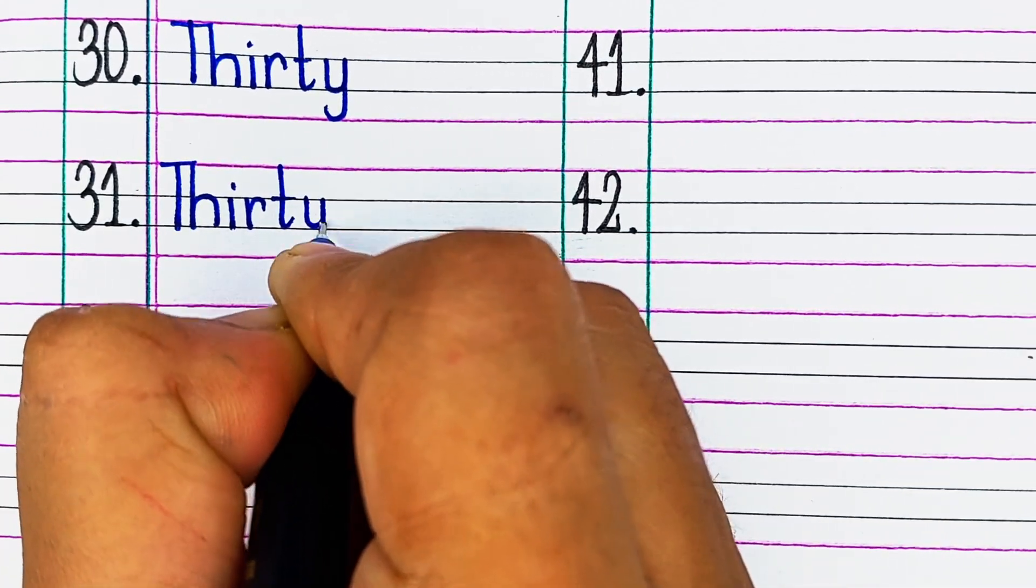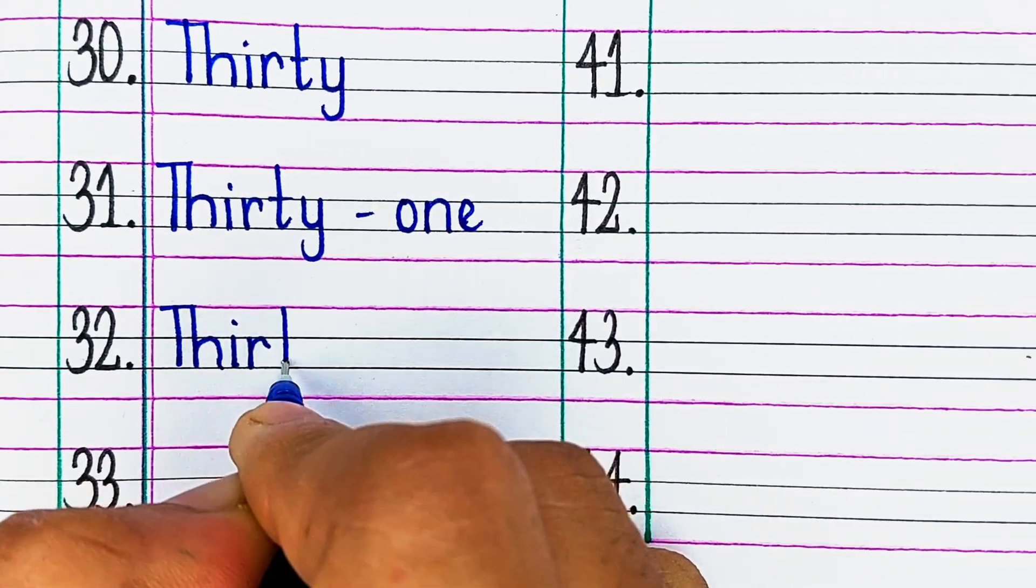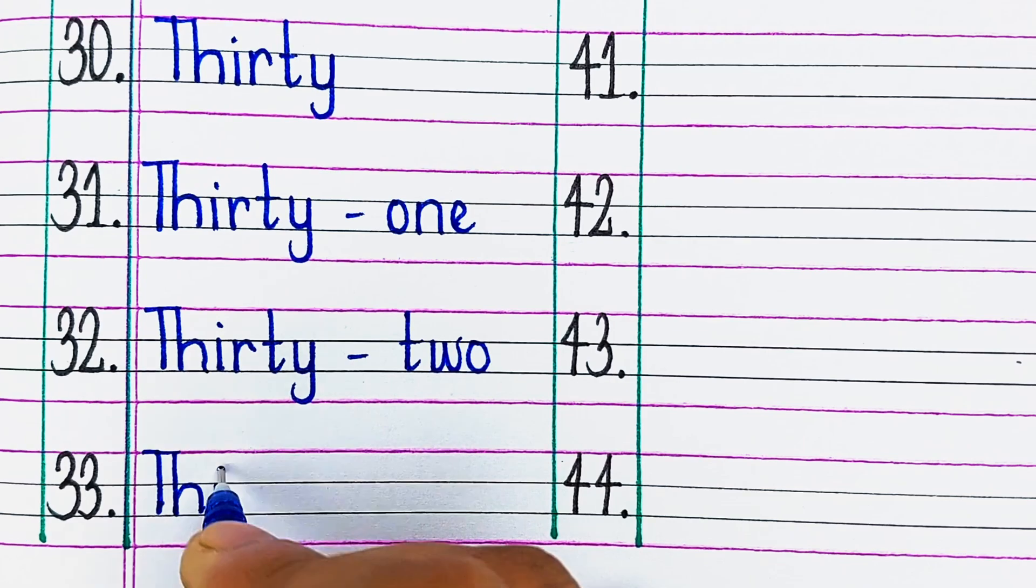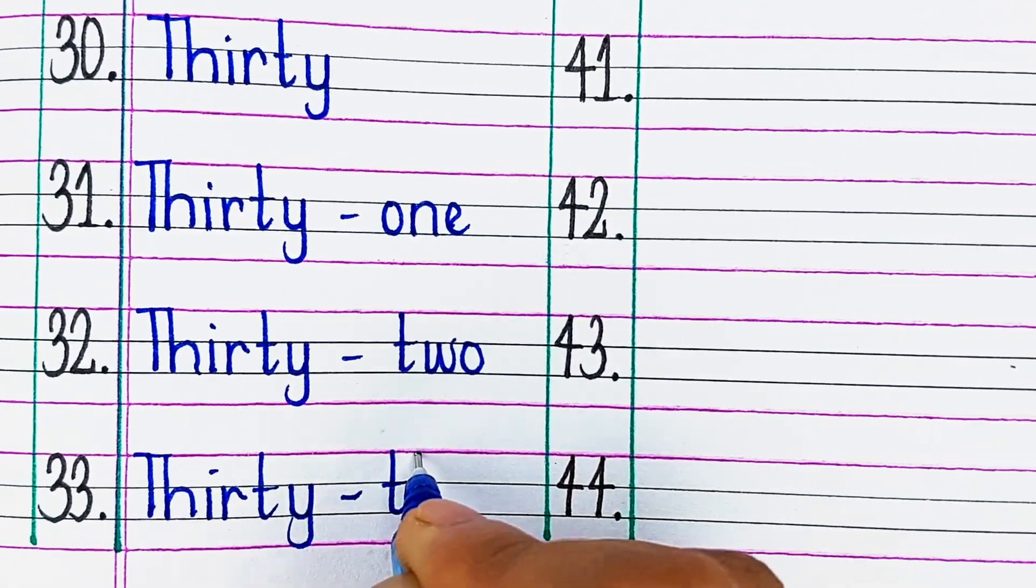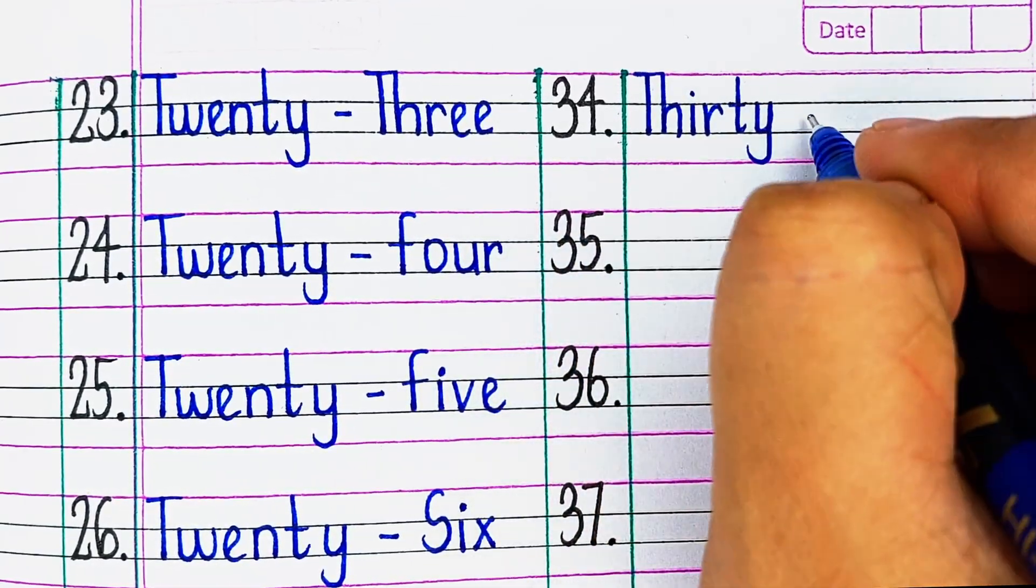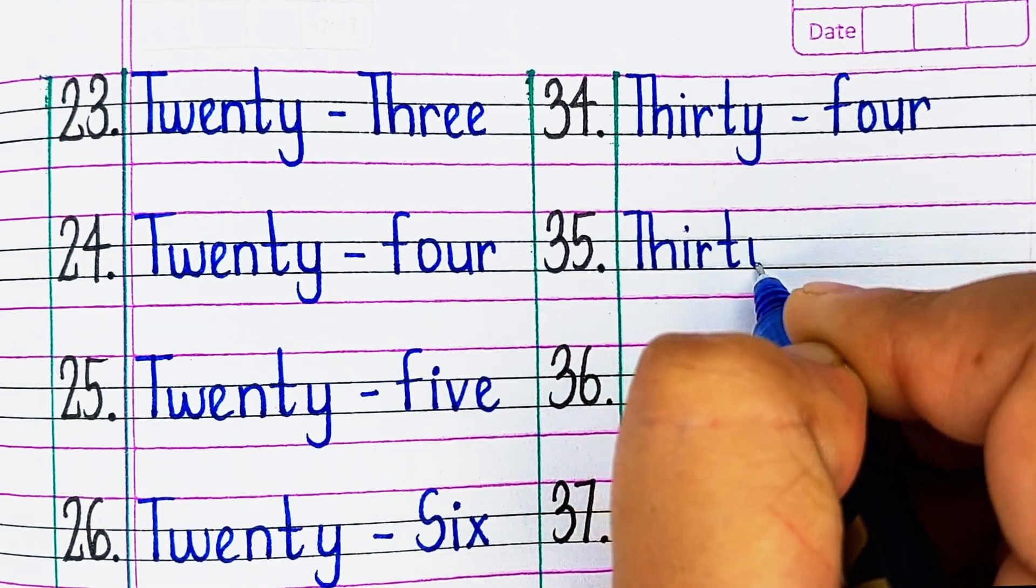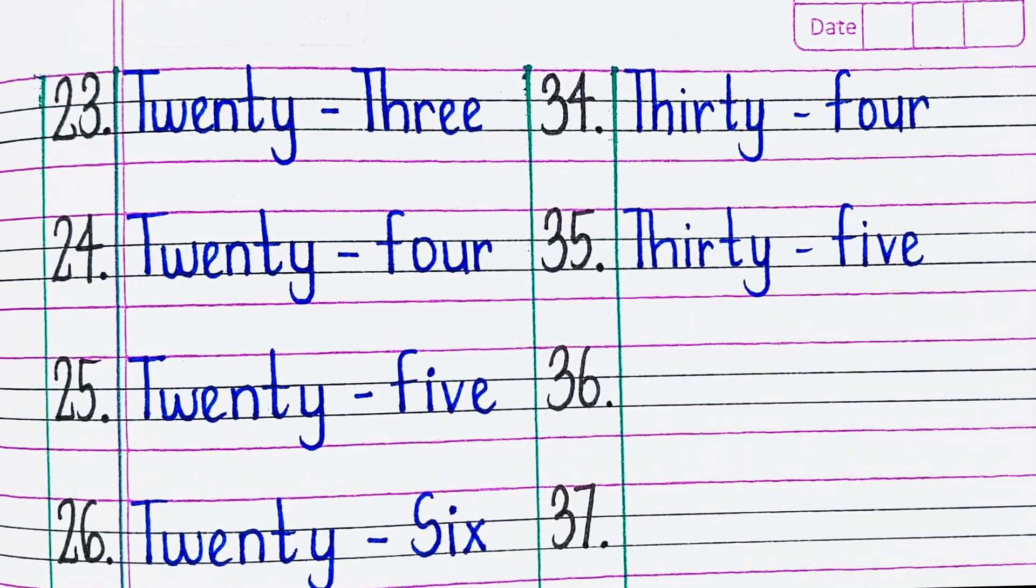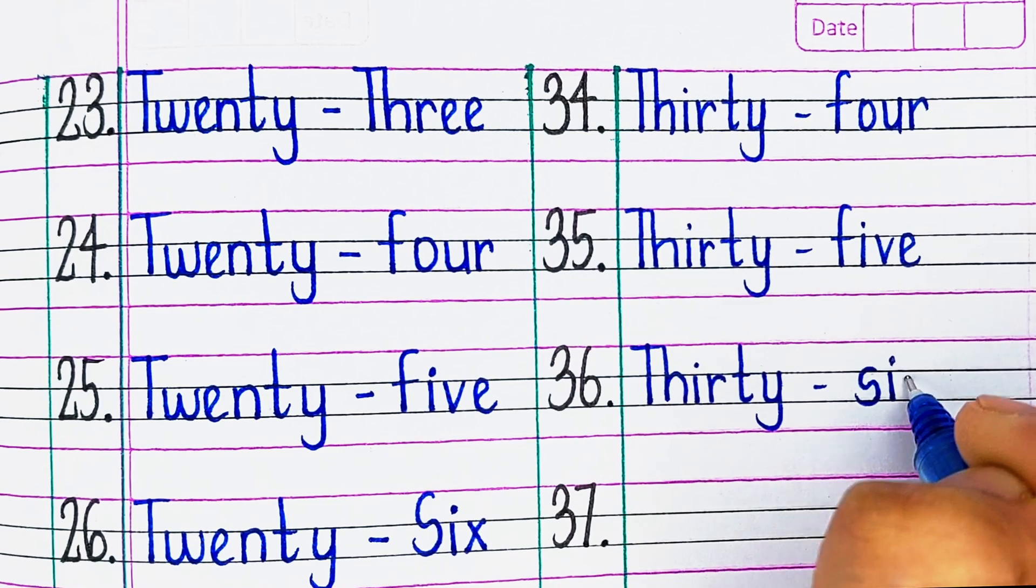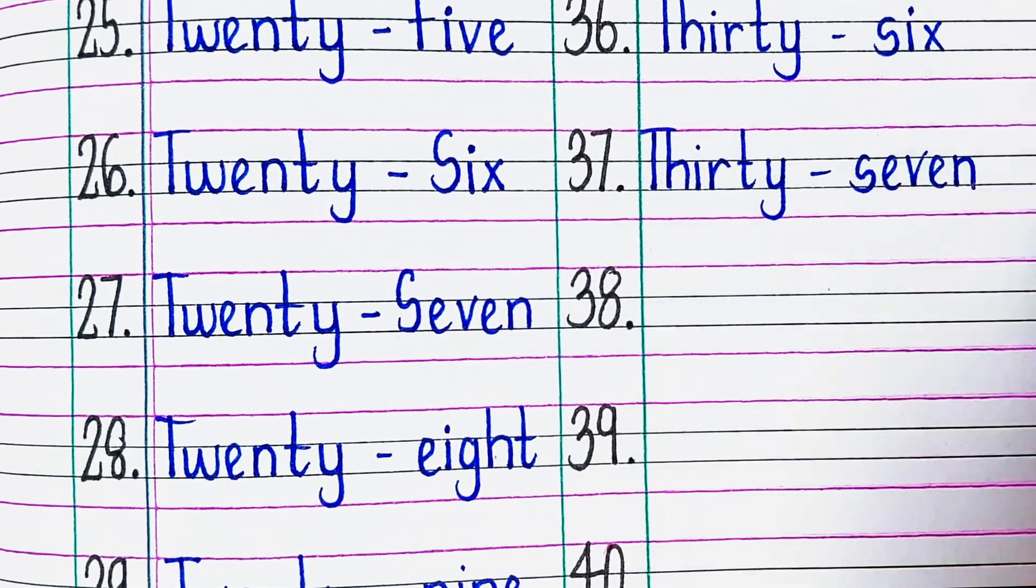Next, T-H-I-R-T-Y-O-N-E, 31. T-H-I-R-T-Y-T-W-O, 32. Next, T-H-I-R-T-Y-T-H-R-E-E, 33. Next, T-H-I-R-T-Y-F-O-U-R, 34. Next, T-H-I-R-T-Y-F-I-V-E, 35.